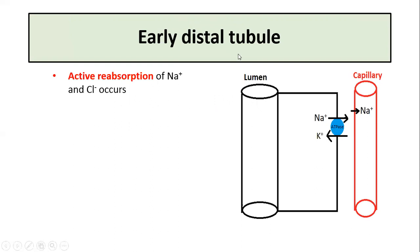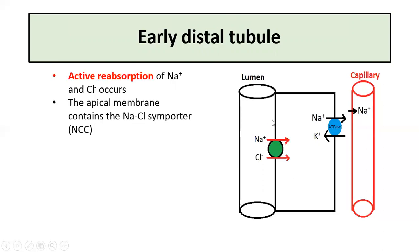In the early distal tubule, active reabsorption of both sodium and chloride occurs. The sodium-potassium ATPase pump present in the basolateral membrane maintains a low sodium concentration inside the cell, which favors the diffusion of sodium into the cell from the lumen. Sodium movement from the lumen into the cell is via the sodium-chloride symporter which is present on the apical membrane, and this moves sodium and chloride from the lumen into the cell.